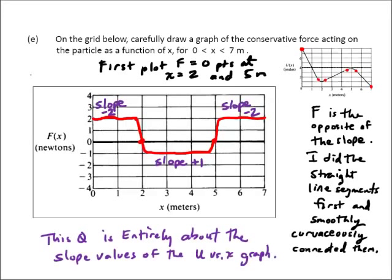Part E. On the grid below, carefully draw a graph of the conservative force acting on the particle as a function of x for 0 to 7 meters. Here, given the first graph which is potential energy versus position, one key idea is tested here, and that is, how do you find force from a potential energy graph? It's the opposite of the slope, the negative slope of the potential energy versus x graph.